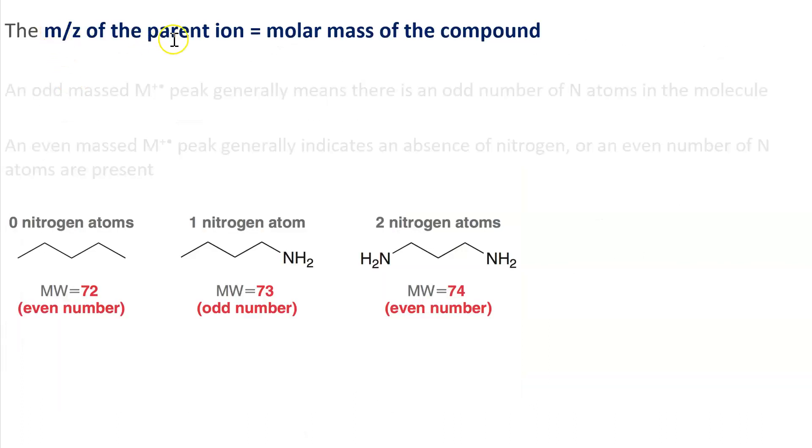The M over Z ratio of the parent ion is equal to the molar mass of the compound. So when we look at a mass spectrum not knowing what our compound is, the first thing we look at is the parent ion.